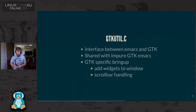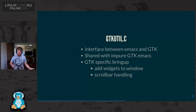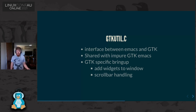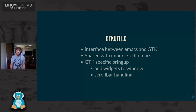GTK util is where most of the drawing happens. It is shared across pure and impure GTK Emacs, so it's the key part we can pilfer and use without too much trouble. It handles scroll bars, a lot of the GTK-specific stuff — menu bars, toolbars, widgets, and all that other stuff. That's all handled in this file.